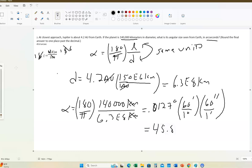45.8 arc seconds. That's what you would type into Blackboard as the correct answer. You can either use a double hash mark, that indicates arc seconds, or you can just write arc seconds. That's the answer. Number two. Thank you.